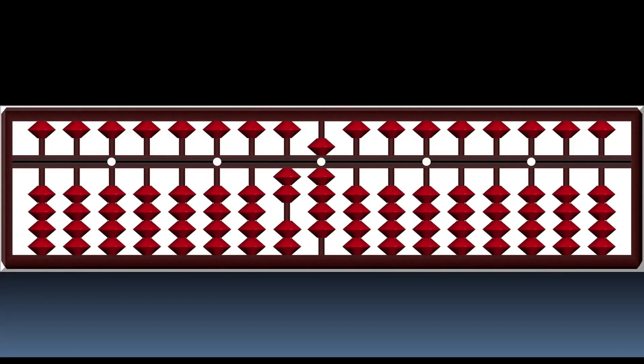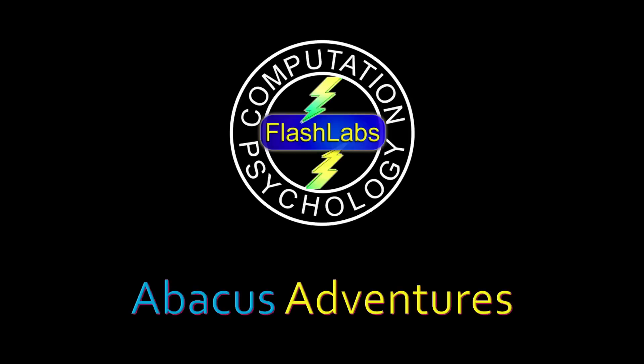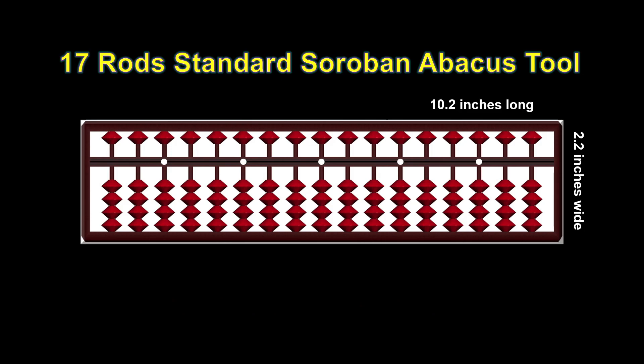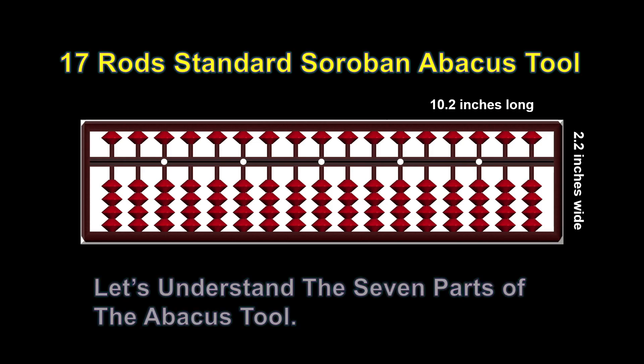Let's understand the Abacus tool and its parts. We will also learn how to clear it before we begin attempting questions. This is the 17-rod standard Soroban Abacus tool, 10.2 inches long by 2.2 inches wide. Let's understand the seven parts of the Abacus tool.